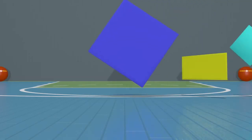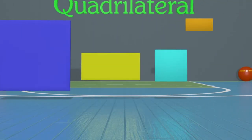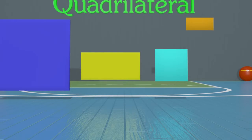Now we're going to look at quadrilaterals. A quadrilateral is any shape that has four sides and four angles. Many shapes can fit the attributes of a quadrilateral. Here are a couple of quadrilaterals — let's learn the names of these shapes. The first shape is called a square.